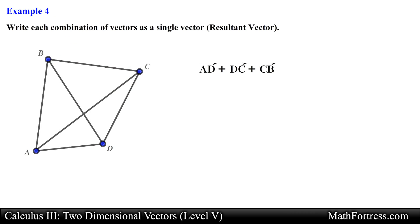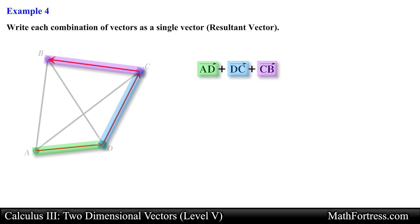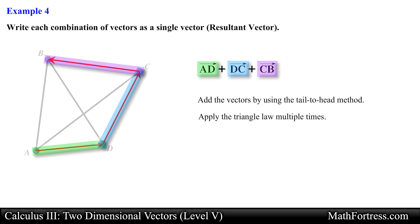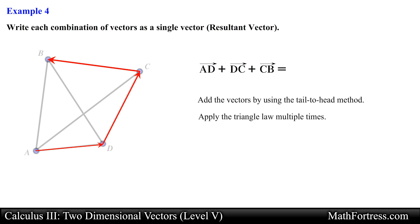Here we are asked to find the sum of vector AD, vector DC, and vector CB. When adding more than two vectors the procedure is essentially the same — you want to add the vectors using the tail to head method. You can think of this process as applying the triangle law multiple times. The resultant vector has its initial point at A and terminal point at B, so the resultant vector is vector AB.